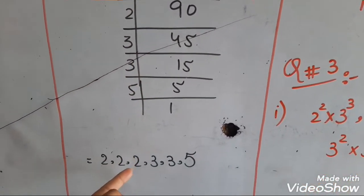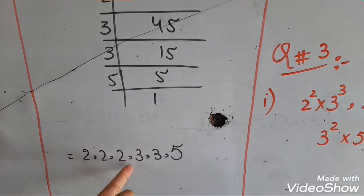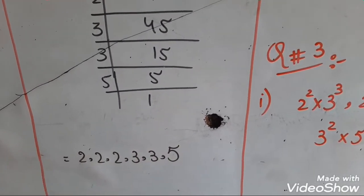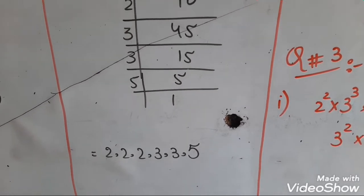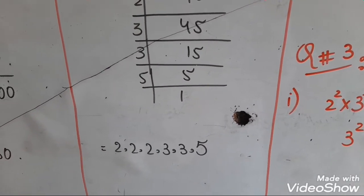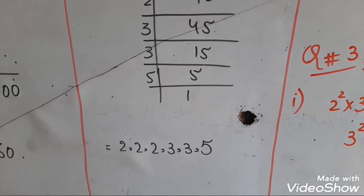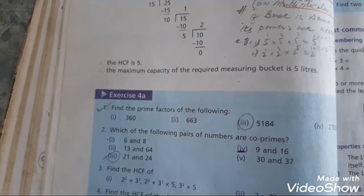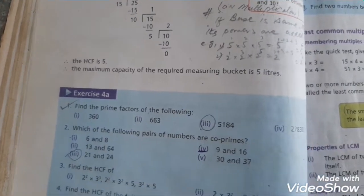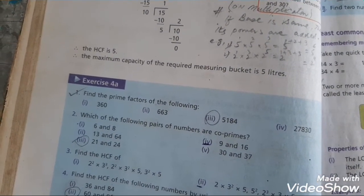ठीक है, और इसे हम लोग यहाँ पर लिखेंगे: 2, 2, 2, 3, 3, 5 — these are the prime factors. इसे हम लोग बीच में multiplication का sign यूज़ नहीं करेंगे; वो तब करेंगे जब HCF या LCM find करना होगा। इस तरह से question number 1 का first part किया है — remaining parts आप लोग घर पर practice करें।